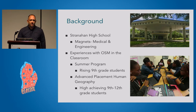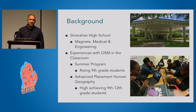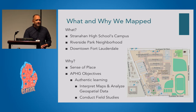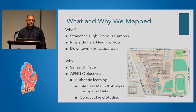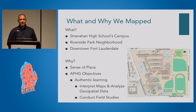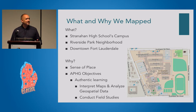The second group is my AP Human Geography students — grades nine through twelve, high achieving students. With them, we've changed up what we map. The ninth grade students did the campus — they marked off important points of interest on campus. What it did is give them a sense of place. When they started school, they had an idea of where they were going and what was important.